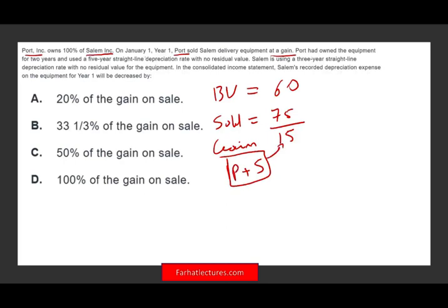P had owned the equipment for two years and used five years of straight line depreciation with no residual value. Salem subsidiary is using three-year depreciation with no residual value. So simply put, for the parent company, it had five-year life. They used it for two years. So when they sold it, there were three years left.